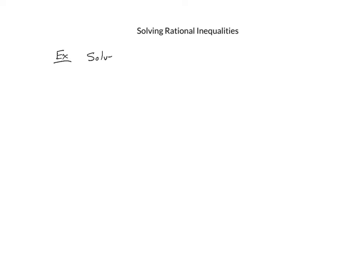In this video I'm going to extend the ideas that we learned in solving polynomial inequalities to solve rational inequalities. A rational inequality looks like this — we'll solve: x minus 10 over x minus 2 is greater than 0.